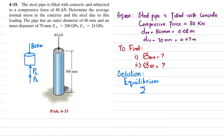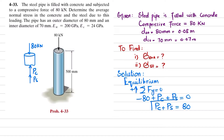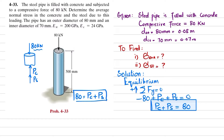The sum of all forces along the y-direction must equal zero, with upward forces taken as positive. So: −80 + Pc + Ps = 0, which gives Pc + Ps = 80 kilonewtons. Here Pc is the load taken by the concrete and Ps is the load taken by the steel pipe. This is equation one.